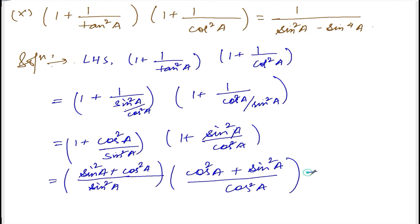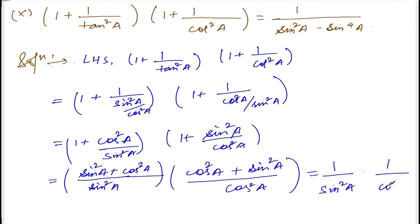The numerator sin squared a plus cos squared a equals 1, divided by sin squared a, into cos squared a plus sin squared a equals 1, divided by cos squared a. So left hand side simplifies to 1 divided by sin squared a cos squared a.